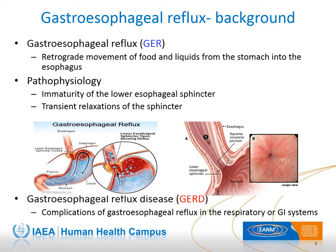Gastroesophageal reflux is defined as the retrograde movement of solids and liquids from the stomach into the esophagus. In young babies, reflux occurs due to abnormal transient relaxations of the lower esophageal sphincter, reflecting the immaturity of the sphincter mechanism. In the majority of infants, it is a transient phenomenon which resolves spontaneously with growth. Gastroesophageal reflux disease includes complications in the GI system, the respiratory system, or both.